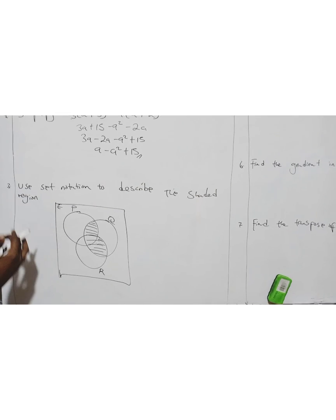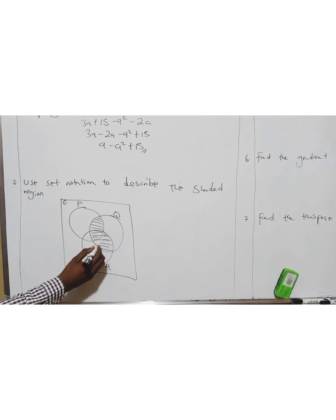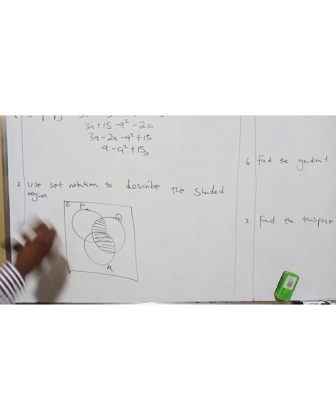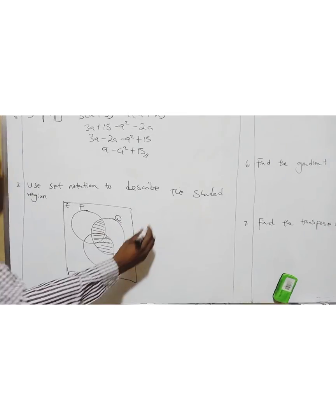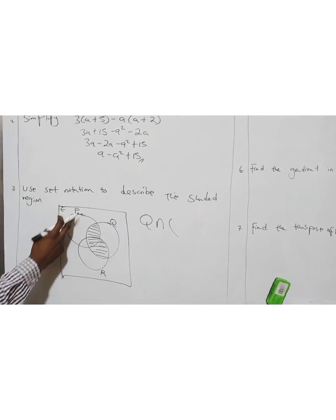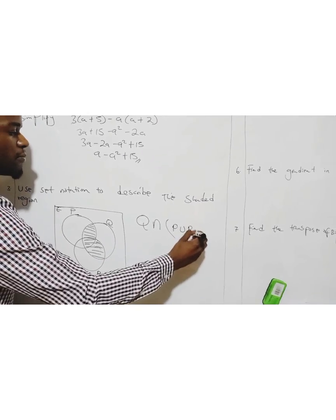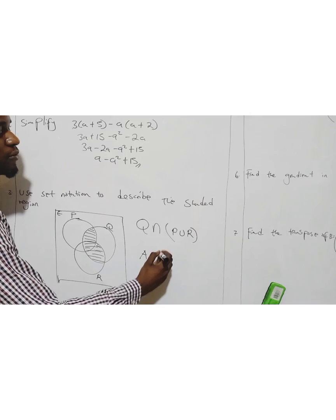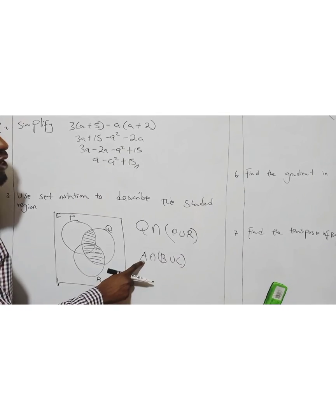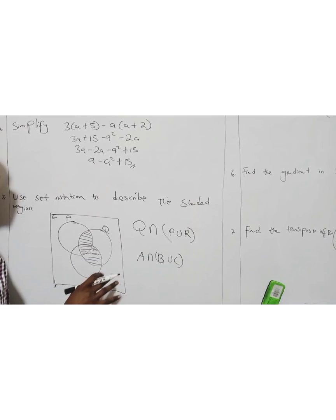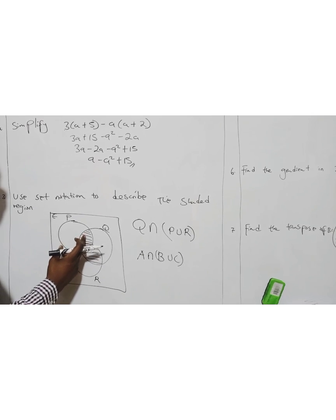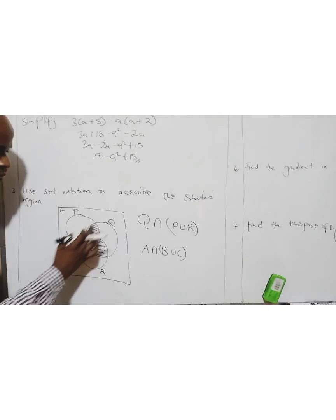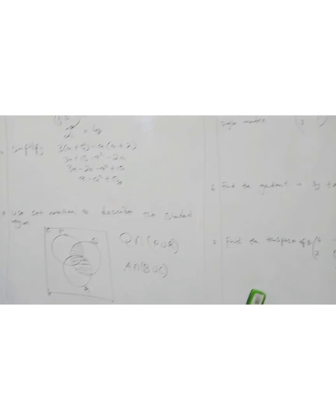Question three: use set notation to describe the shaded region. This is new syllabus. If you see this, there's a set that has all the intersections shaded. What is that set? Q. So this is Q intersection, and there's P and R you combine them, so P union R. The set that has all the intersections shaded is found outside.